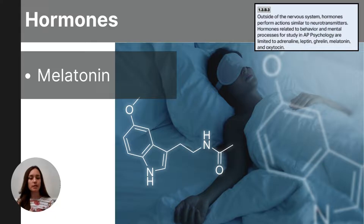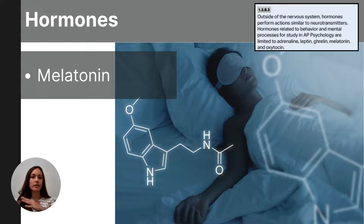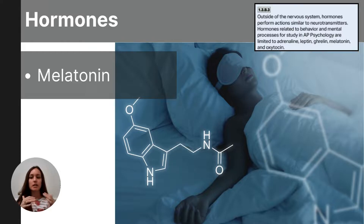Melatonin is a hormone released into the bloodstream that regulates our sleep and wake cycles, called the circadian rhythm. Melatonin promotes sleep, and its production is influenced by light and dark cycles. Typically, melatonin levels increase in the evening, making us feel more sleepy, and decrease in the morning as daylight returns, making us feel more wakeful.